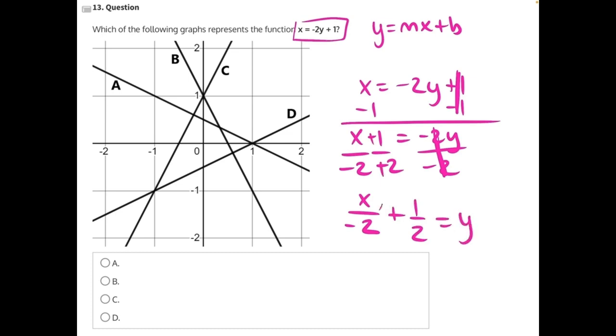Another way we can rewrite this, because any time a variable exists there is always one of them, this could also be rewritten as negative 1 half x plus 1 half.